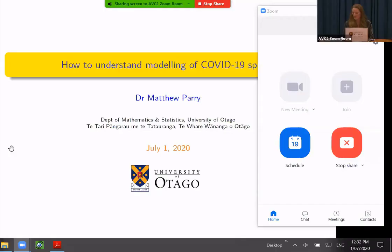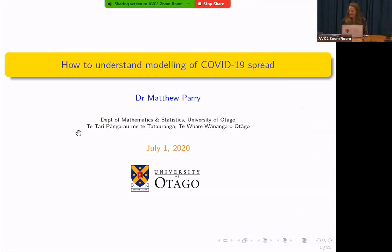And on to our next speaker, Dr. Matthew Perry, who is a statistician in the Department of Mathematics and Statistics at the University of Otago. He applies statistical and mathematical modeling to problems in epidemiology, epigenetics, and agri-tech. Matthew will present how to understand modeling of COVID-19 spread.